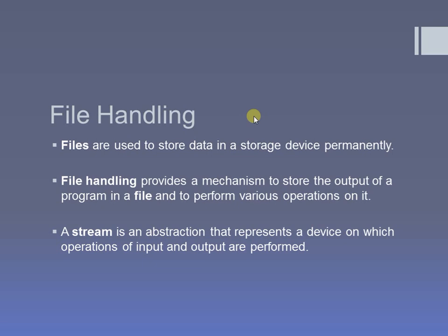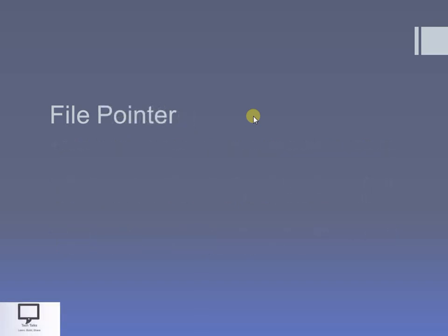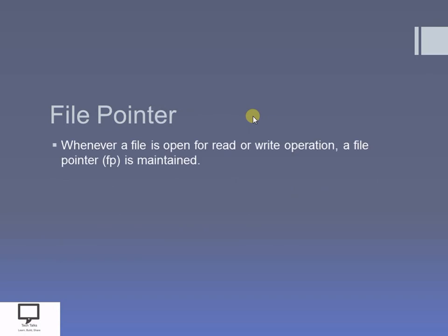To perform all these operations, file handling is a mechanism that is helpful to perform these different operations. To perform these different operations, we need to use different streams. Streams help us to perform all input and output operations. With the help of a file pointer, we can perform all these operations. A file pointer is very helpful to perform all these operations.